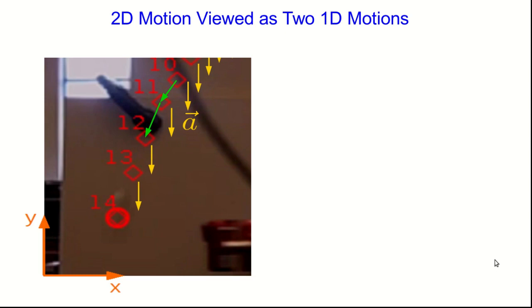To start to see how we think of a 2D motion as two 1D motions, let's return to this falling object. And one way of thinking of vector decomposition is that we are projecting the vectors onto the x and y axes. So here are those two velocity vectors projected onto the x and y axes, which give us the x and y component vectors. And we can similarly project the acceleration vectors onto the axes.